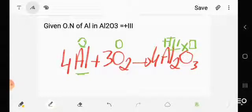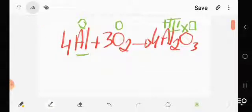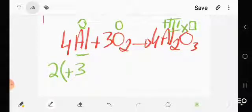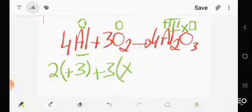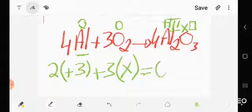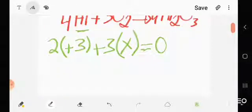So let us apply the rule. How many aluminum atoms do I have? I have two aluminum atoms times plus three plus three times X. We said that the sum of oxidation number in this neutral compound is equal to zero. Let us find X.